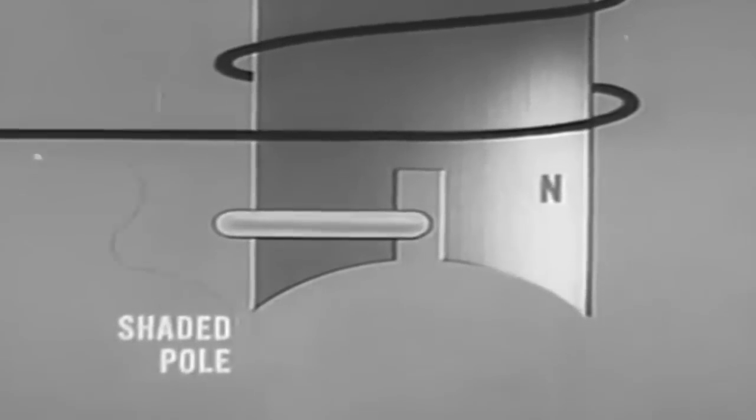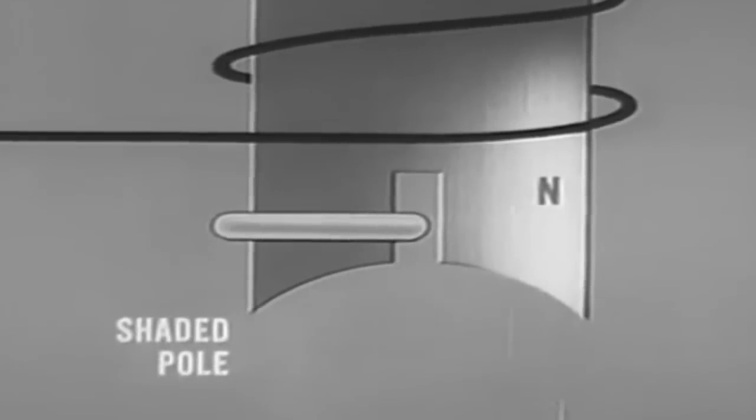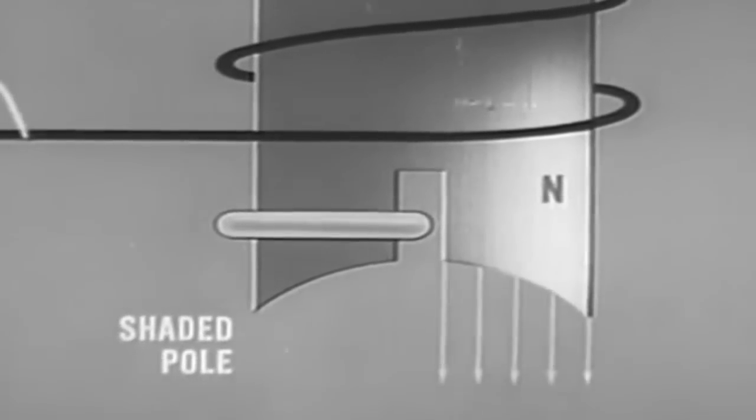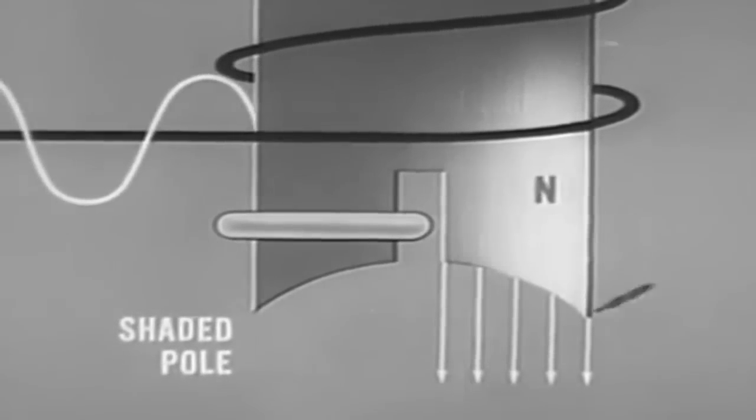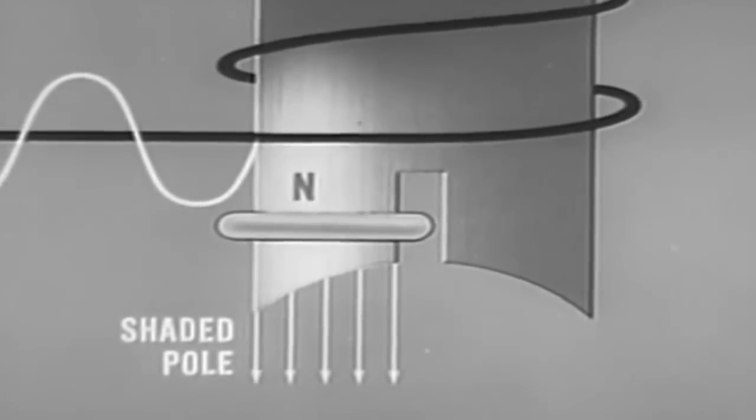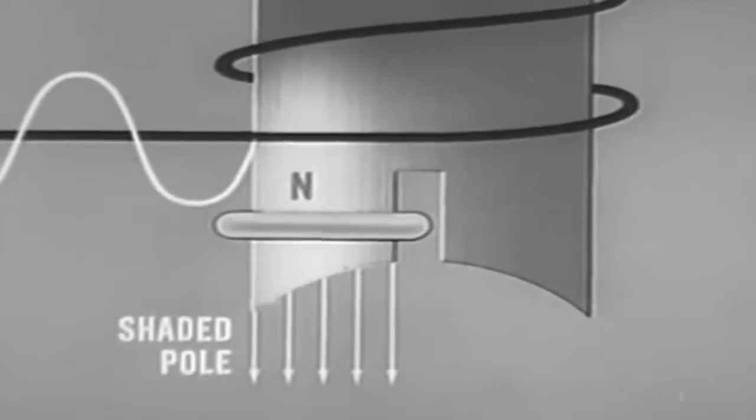In order to create relative motion between field and rotor, shaded poles may be used. The unshaded portion is energized first. Because of the increased inductance in the shaded portion, the field here develops more slowly.